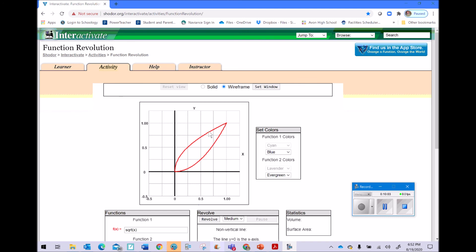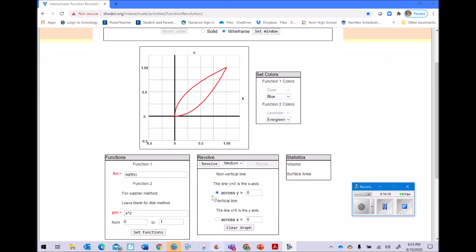And then you just decide which axis you're going to revolve around. In this case we're going to revolve around the line y equals zero, which they remind you that is the x-axis. And you can set the revolution to be fast, medium or slow. Let's build some suspense here and we'll make it medium, and I'll keep the default colors for blue and evergreen. So here I go, I'm going to push the revolve button.